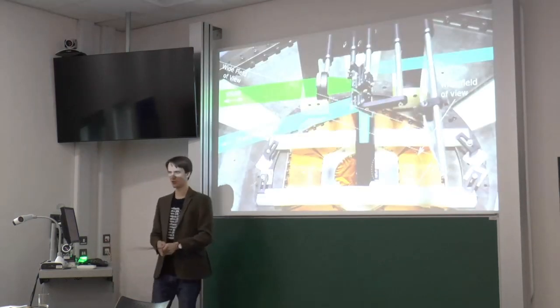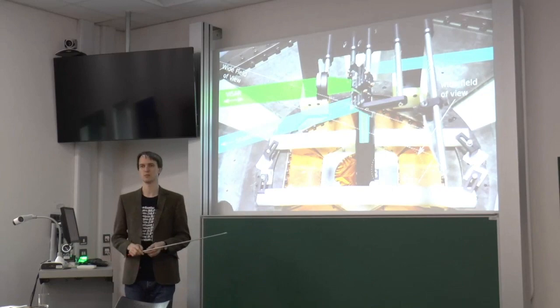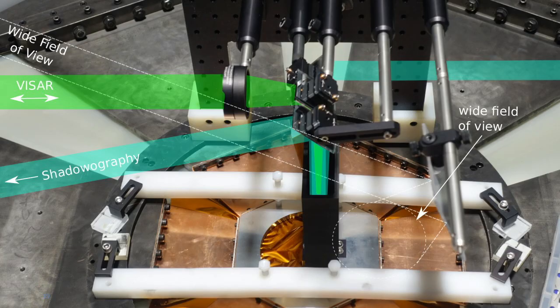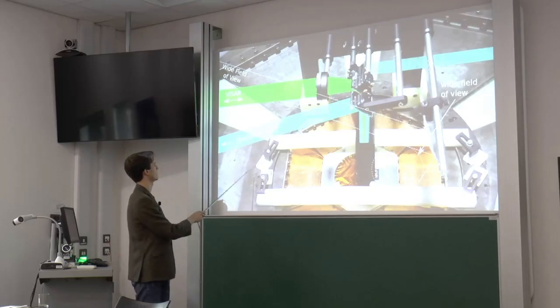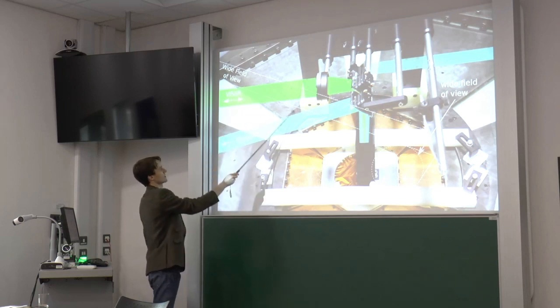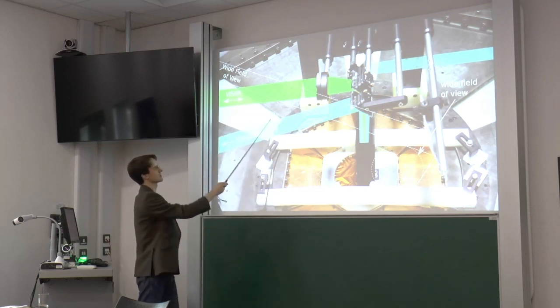So this shows the real in-situ setup for the flyer plate experiments. The machine has six-fold symmetry, six modules, and we have, if I come from the outside, we call these bits of metal here the pizza slices. So there's six of those.